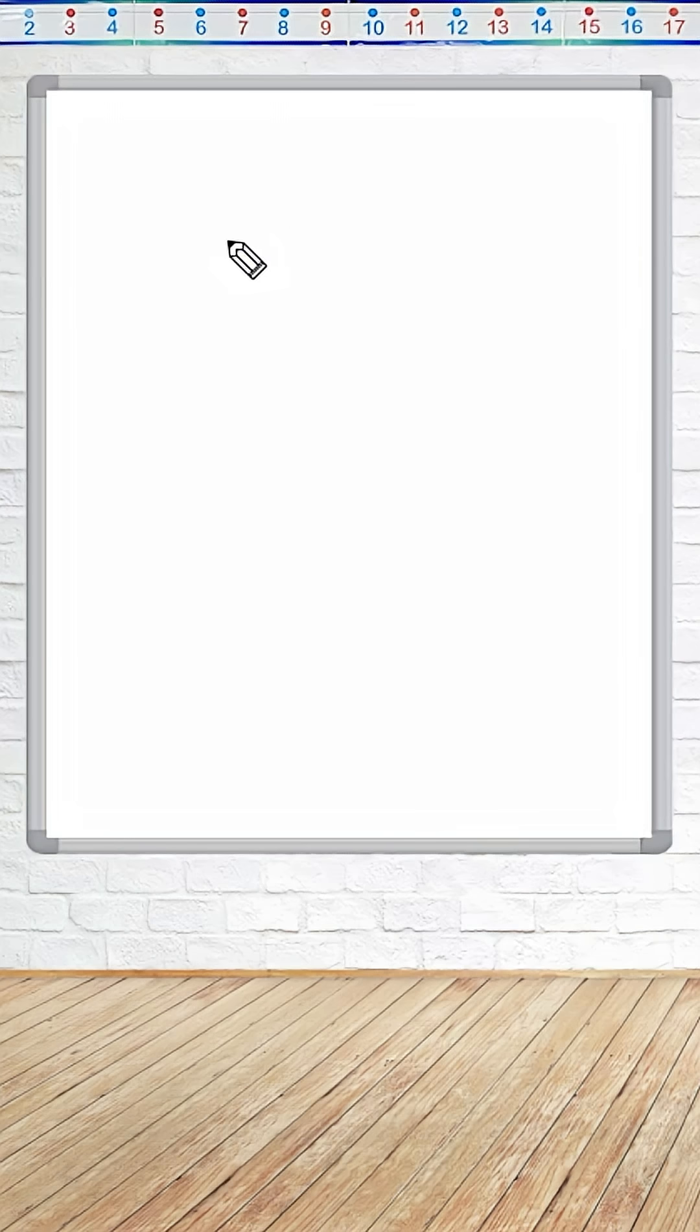All right, so let us take any number minus itself. For example, let's take 5 minus 5. We know that is equal to 0. Or let's take 9 minus 9. We know that is equal to 0, of course.